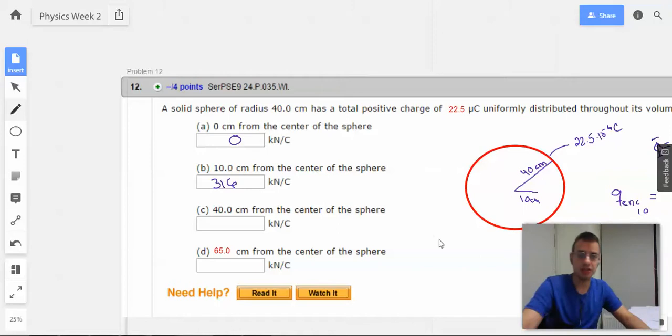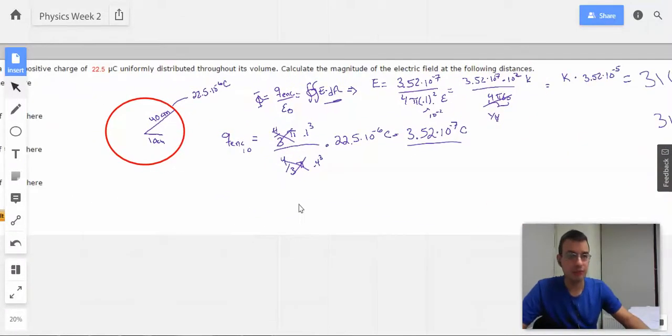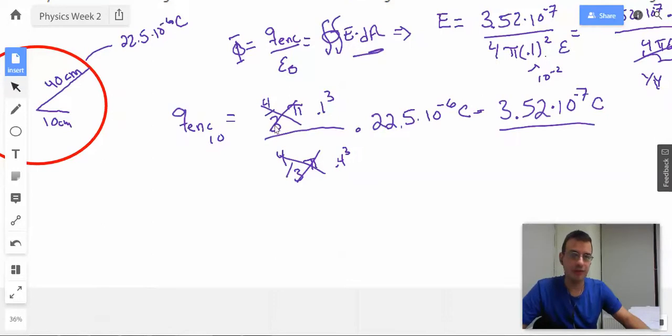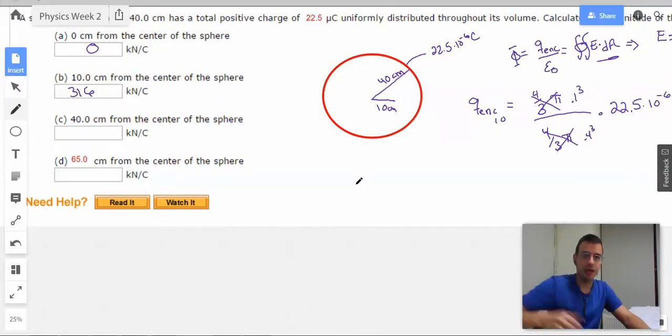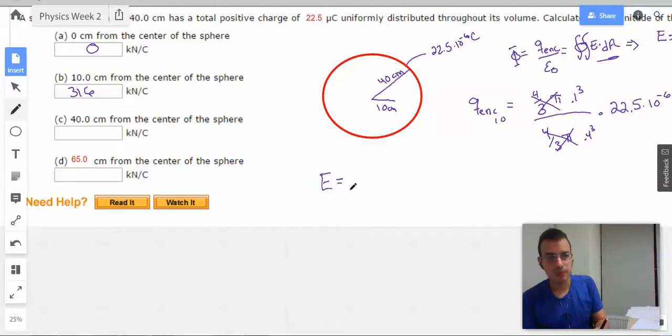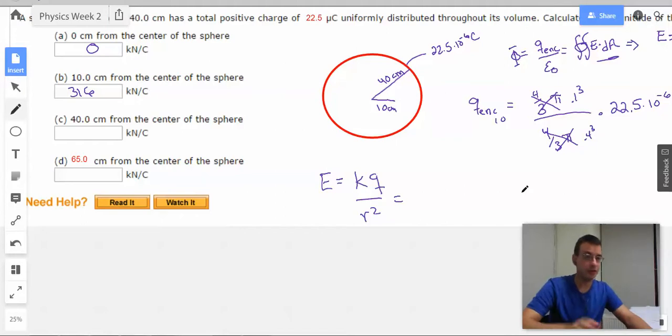Now, we want to look at it 40 centimeters from the center of the sphere. So we could do the exact same thing we did before, except this time we would get, we'd have 4 3rds pi .4 cubed over 4 3rds pi times .4 cubed, which would just be 1. So q enclosed is all of q. So to do this, I'm just going to skip Gauss's law and use the definition of an electric field. I'm going to treat everything in here as a point charge. You can use Gauss's law, but when you have a spherical shape and you're outside of the sphere, you can treat everything in the sphere as a point charge. So that's what I'm going to do for this, kq over r squared. So if you feel more comfortable trying to use Gauss's law and drawing a Gaussian shape using q enclosed over epsilon naught, feel free to do so. You'll get the same answer.